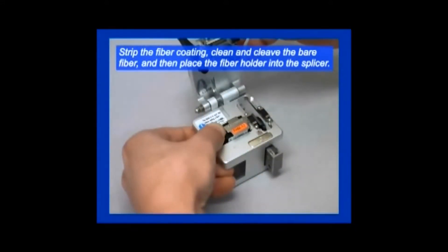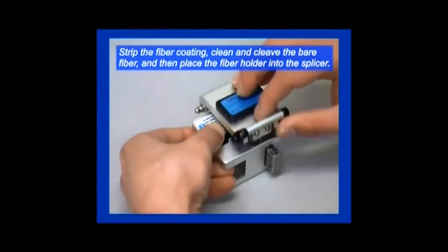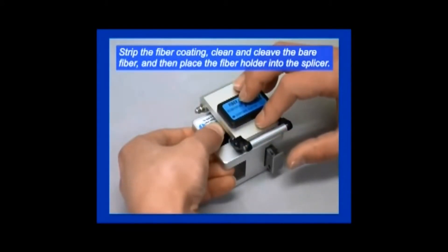Once the two ends of the fiber ribbons are placed in the splicing machine, the technician then presses a green button to start the splicing process.